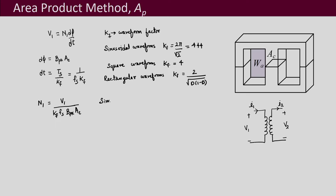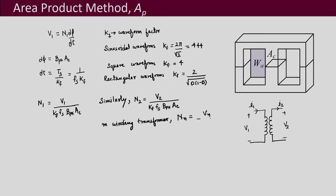Substituting for dφ and dt, we can write N1 as equal to V1 / (Kf × Fs × Bpk × Ac), where Bpk is the peak flux density and Ac is the cross-sectional area of the core. Similarly, N2 = V2 / (Kf × Fs × Bpk × Ac). For an m-winding transformer, the general expression is Nn = Vn / (Kf × Fs × Bpk × Ac), where n = 1 to m.